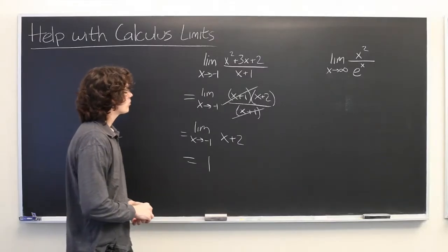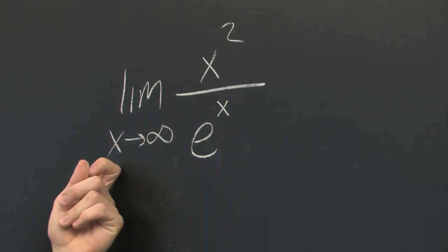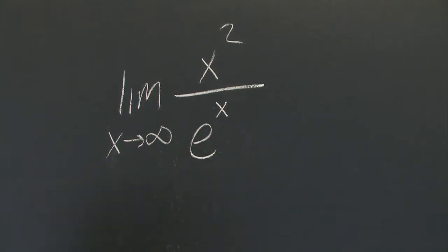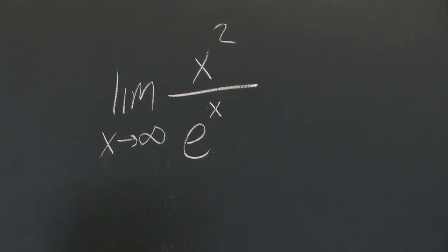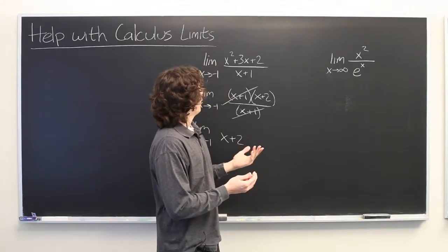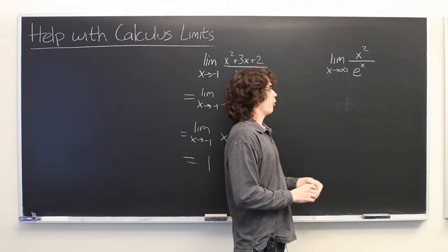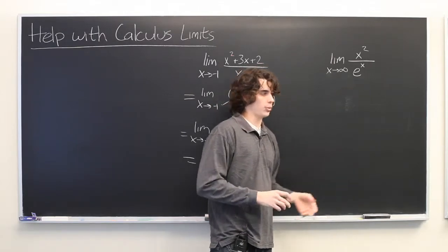Okay. Well, here's another sort of problem. We have the limit as x goes to positive infinity of x squared over e to the x. Well, here we can't factor anything because the numerator is simply a monomial and the denominator is an exponential function.